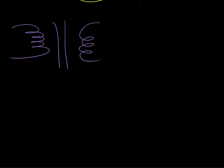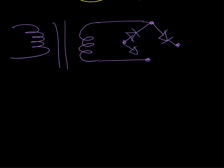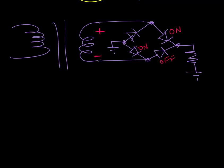Now let's look at the bridge rectifier circuit and do the same analysis. The bridge rectifier circuit has four diodes in this arrangement, going to a load resistor with ground here. With a given secondary polarity, two diodes are on and two diodes are off. Let's look at the peak inverse voltage across one of the off diodes and find the voltage across it.